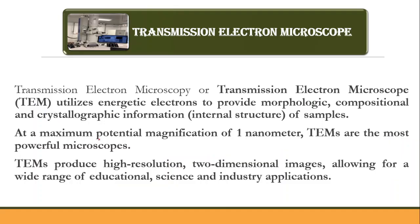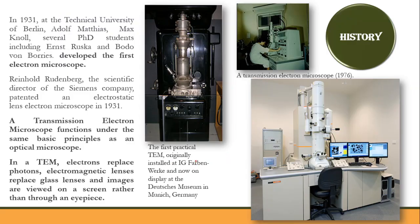Coming to Transmission Electron Microscopy — the name itself suggests that energetic electrons transmit through the sample, allowing you to see the internal structure. Unlike SEM, TEM gives you only a 2D image, but the resolution is still very good.